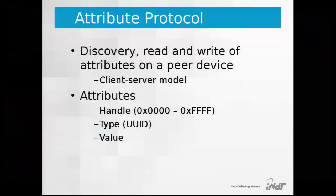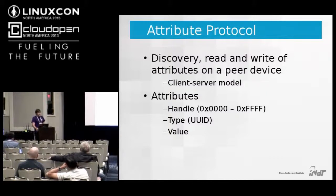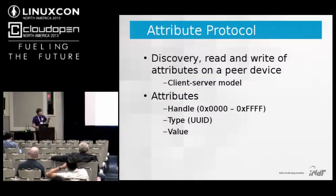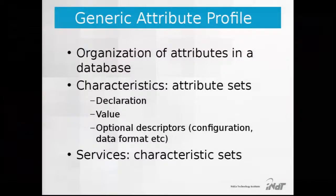The Attribute Protocol is designed with small data transfers in mind. It works in a client-server model: the client can read, write, and be notified of changes to attribute values on the server. Attributes are basically a pair of a type and a value, with well-defined types assigned UUIDs by the Bluetooth SIG. On the server, each attribute has a handle used to address it.